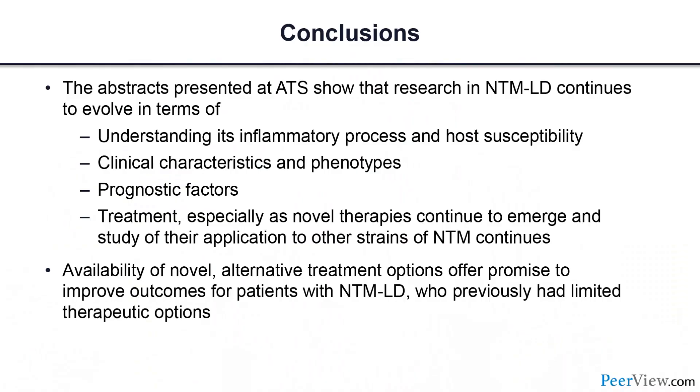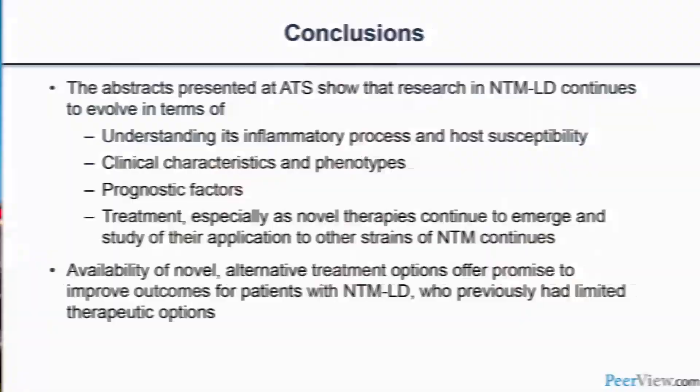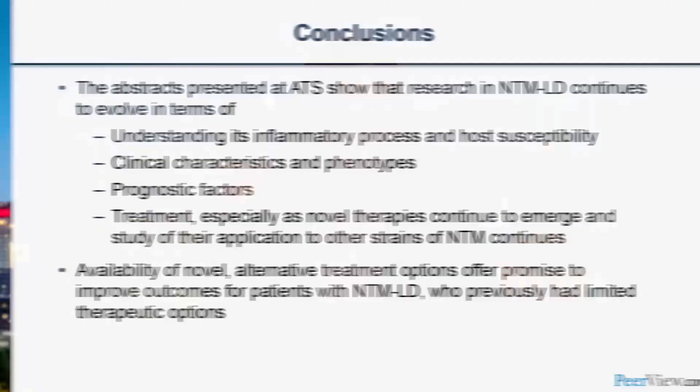In conclusion, the abstracts presented at ATS show that research in NTM lung disease continues to evolve in terms of understanding its inflammatory process and host susceptibility, clinical characteristics and phenotypes, prognostic factors, and treatment, especially as novel therapies continue to emerge and their application to other NTM strains continues to be studied. The availability of novel alternative treatment options offers promise to improve outcomes for patients with NTM lung disease who previously had limited therapeutic options. We look forward to seeing more data emerge. Thank you very much for participating.